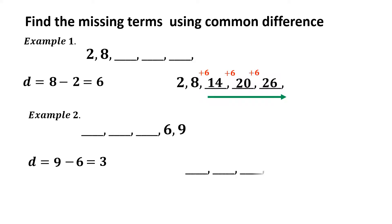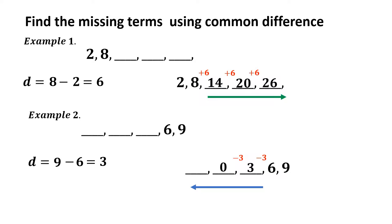Now we will find the missing terms using the common difference. As you can see, the direction of the arithmetic sequence is decreasing, so we will subtract the common difference. Starting with 6: 6 minus 3 equals 3, then 3 minus 3 equals 0, and lastly 0 minus 3 equals negative 3. Therefore, the arithmetic sequence is negative 3, 0, 3, 6, and 9.